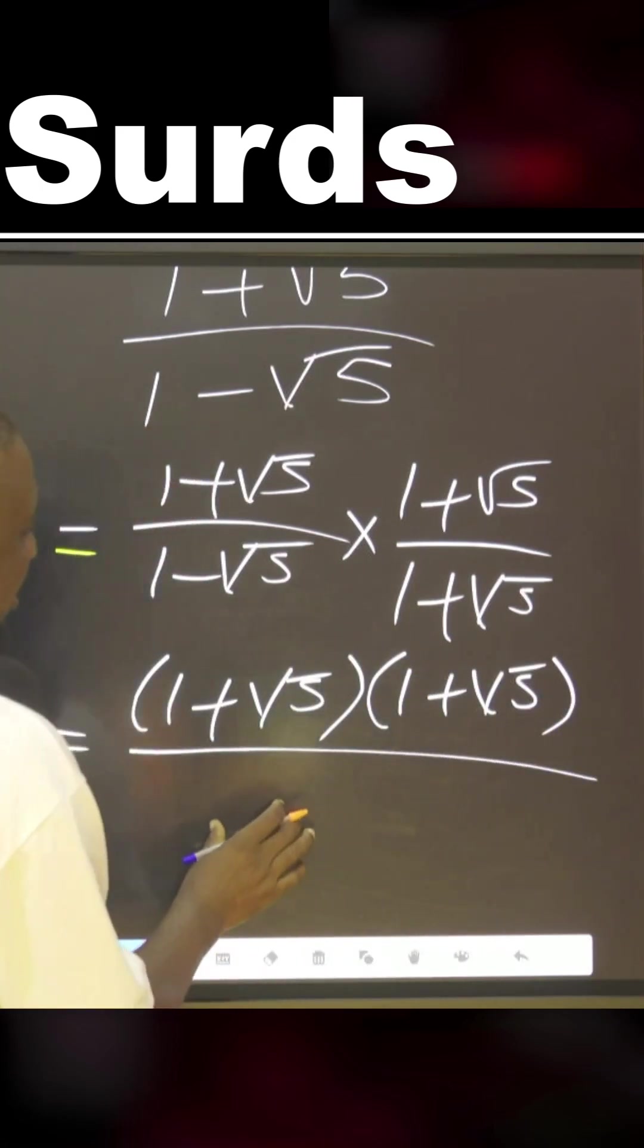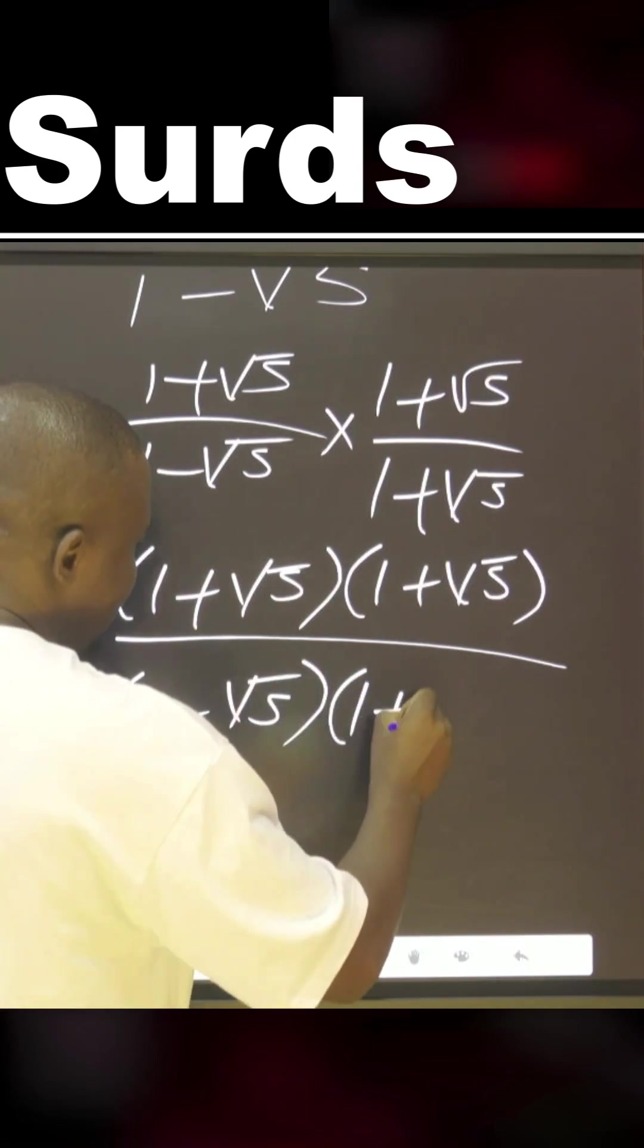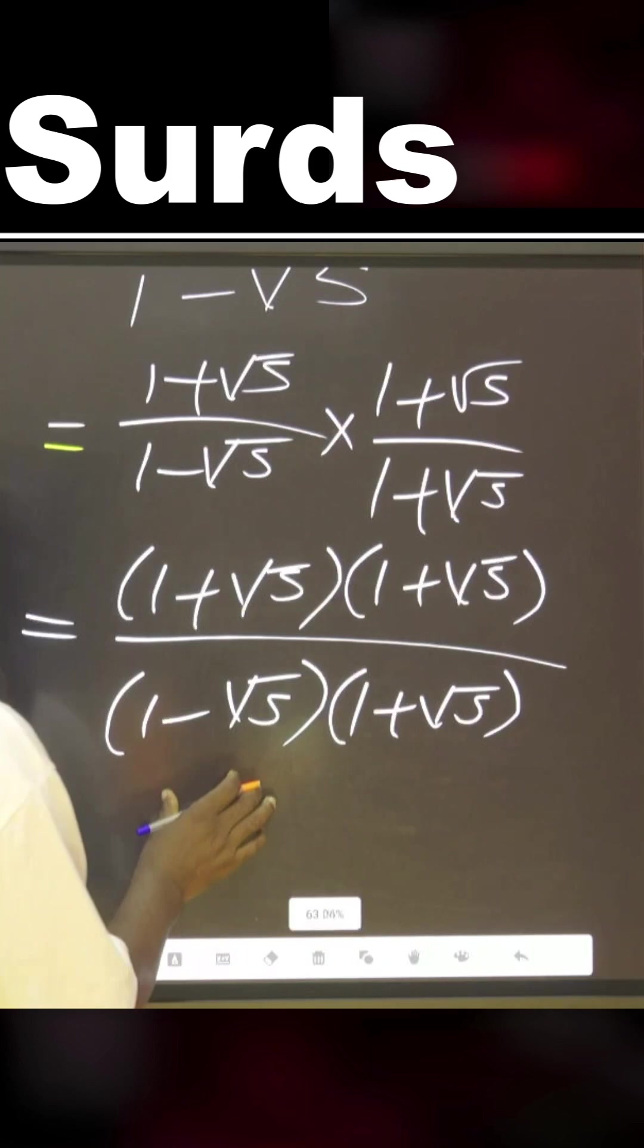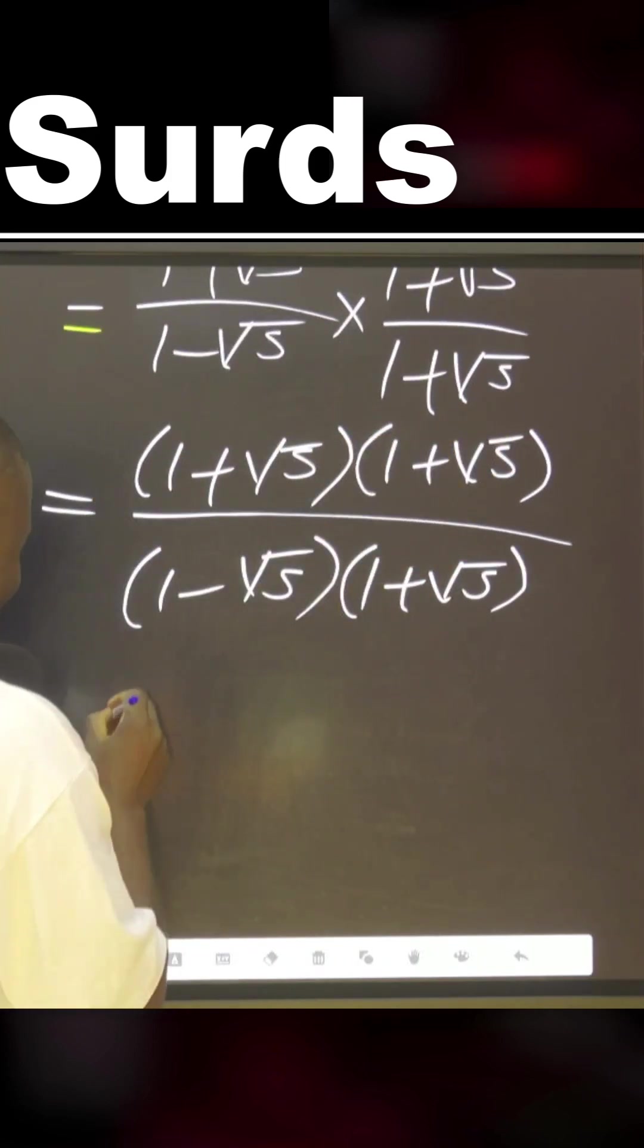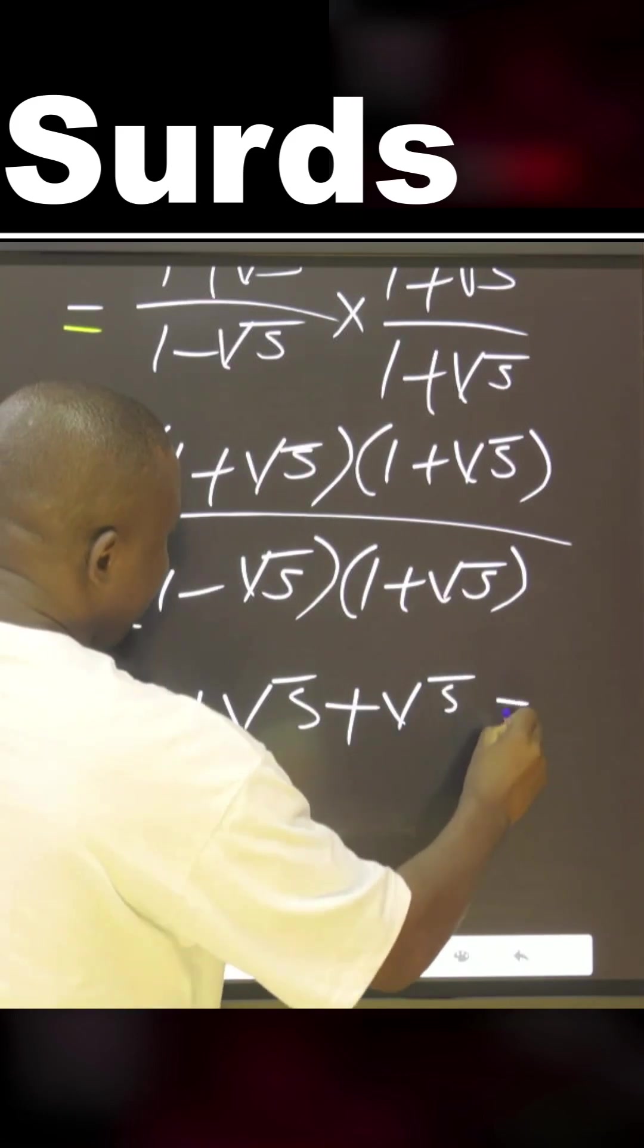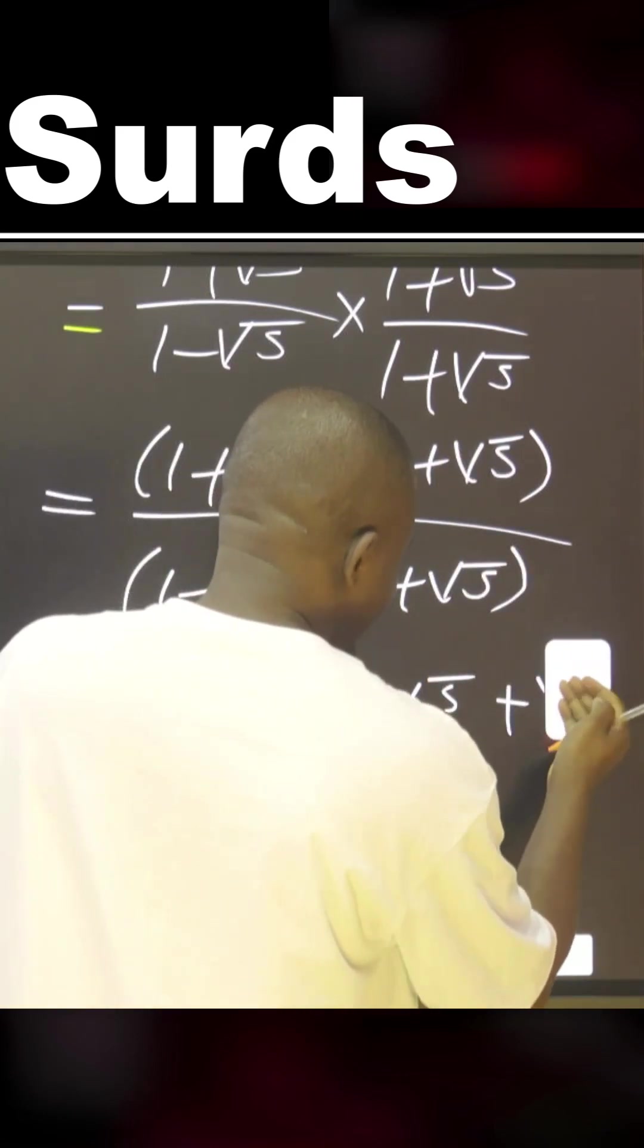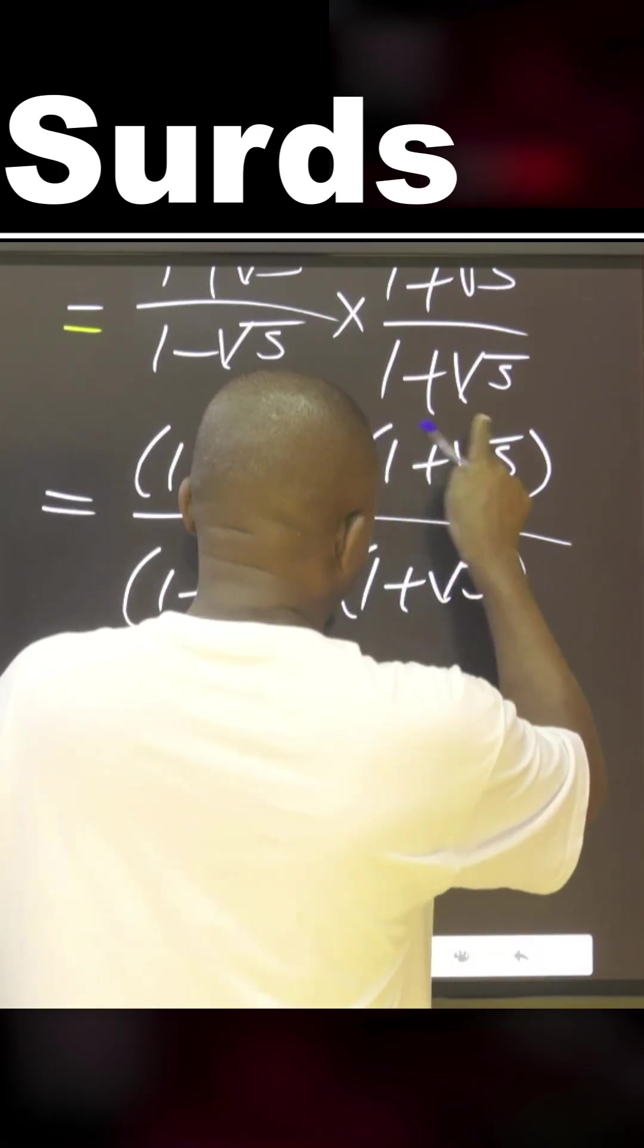Now you can write this as, you agree with me? Also this can be written as this. Okay, now if you solve this, you have one plus square root of five plus square root of five plus square root of five raised to the power two, which is five. You can solve it. This multiplied by this will give you five.